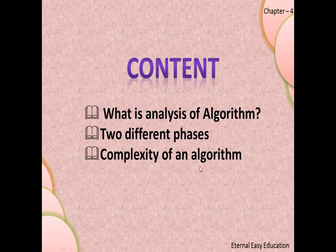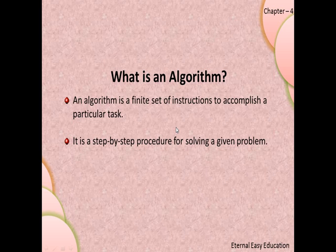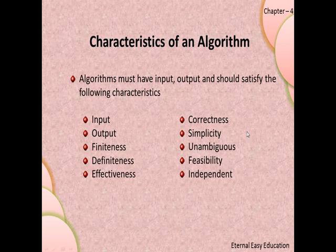A recap: what is an algorithm? An algorithm is a finite set of instructions to accomplish a particular task. It is a step-by-step procedure for solving a given problem — if there is a question, there is a solution written step by step. An algorithm must have characteristics: input, output, and the steps should be finite with definiteness — they should be in a correct manner.